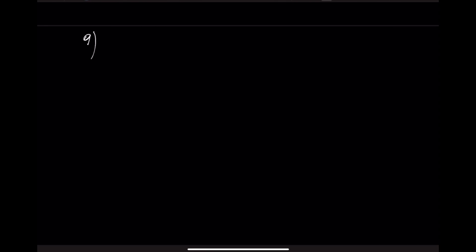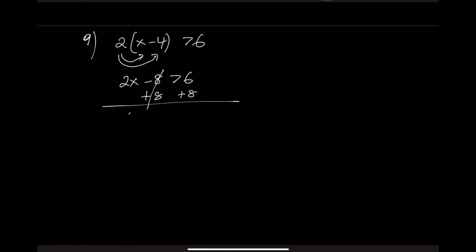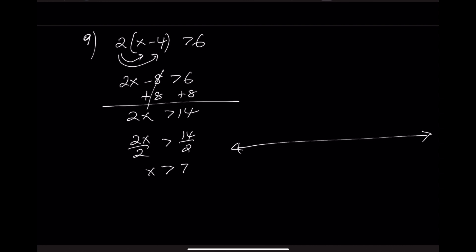Example 9: 2 times the quantity x minus 4 is greater than 6. Use the distributive property: 2x minus 8 is greater than 6. Add 8: 2x is greater than 14. Divide by 2: x is greater than 7. Draw a number line. Open circle at 7, arrow to the right. The solution is from 7 to infinity.